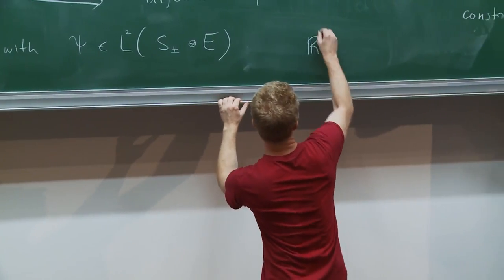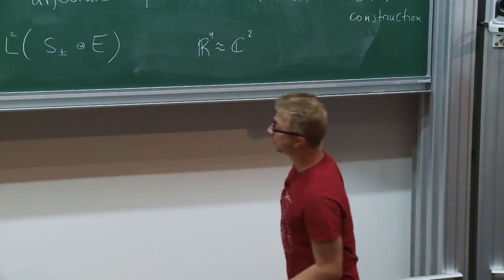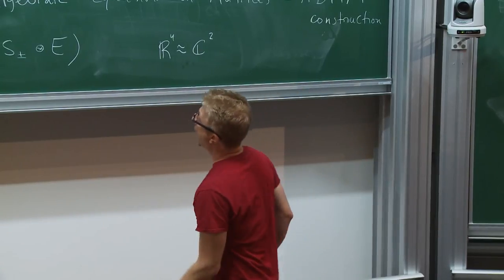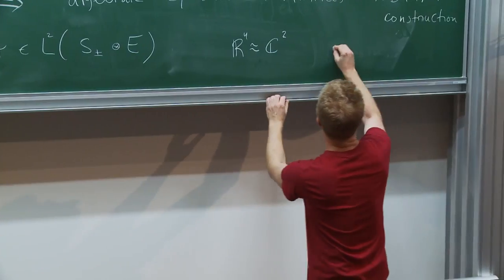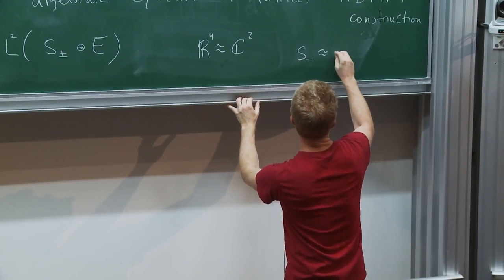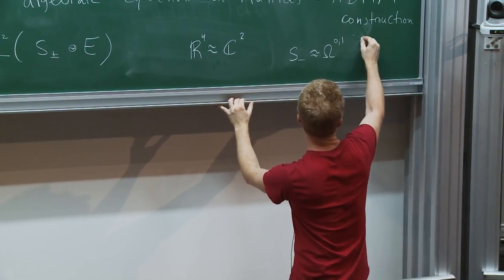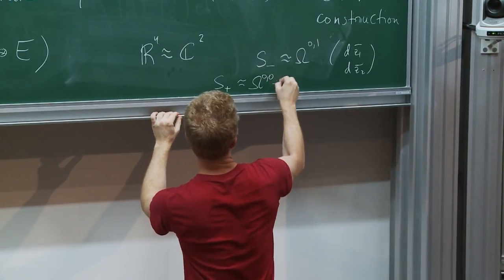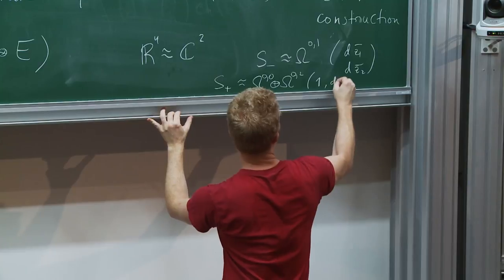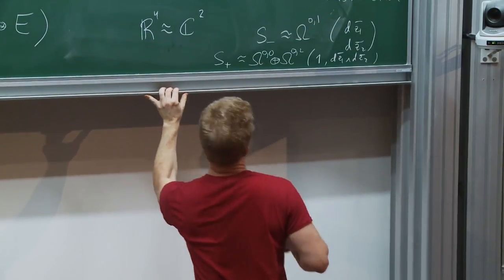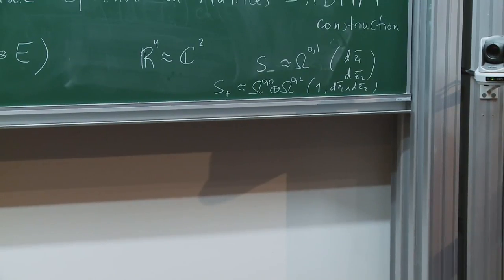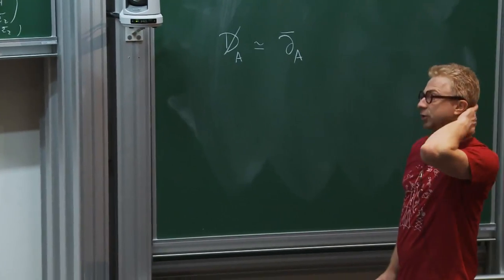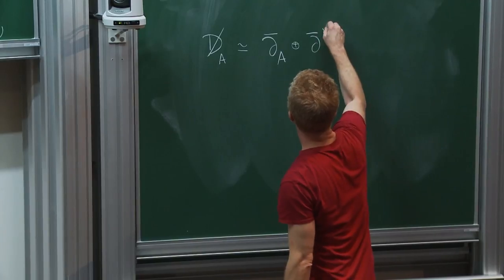I will pick a complex structure on R4 for simplicity, identifying spinors with differential forms. S-minus is identified with (0,1)-forms — things like dz̄1 or dz̄2. S-plus is identified with (0,0) and (0,2)-forms — so it's 1 or dz1∧dz2. Under these identifications, the Dirac operator is the sum of the Dolbeault differential coupled to the gauge field plus its conjugate.